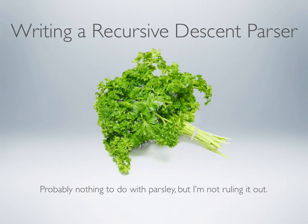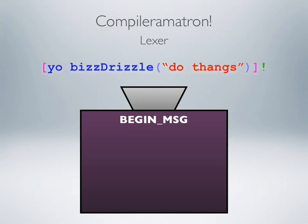I've said you want to get your source code into LLVM, but I haven't really said how to do that. The compiler starts with the lexer. As I said, you want to convert from source code into tokens. So we've got our fantastic language — we have our method call: 'yo biz drizzle do things'.